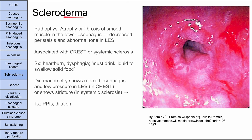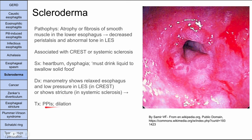Next is scleroderma — a systemic disease that affects the esophagus. The pathophysiology is atrophy or fibrosis of the smooth muscles in the lower esophagus, resulting in decreased peristalsis and abnormal tone in the lower esophageal sphincter. This can be associated with CREST syndrome or systemic sclerosis. Symptoms are heartburn and dysphagia — some patients need to drink liquid to swallow solid food. Manometry shows a relaxed esophagus with low LES pressure (in CREST) or strictures (in systemic sclerosis). Treatment is PPIs and dilation.